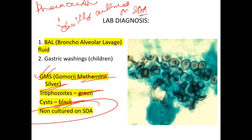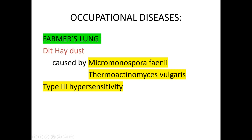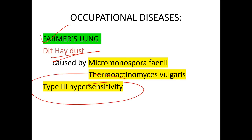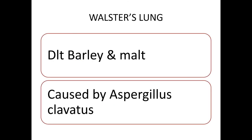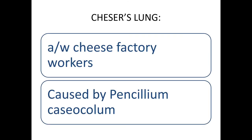Some occupational diseases: farmer's lung is caused by hay dust (type 3 hypersensitivity, caused by Micromonospora faeni and Thermoactinomyces). Bagassosis is caused by sugarcane dust. Malt worker's lung is caused by barley and malt. Cheese worker's lung is associated with cheese factory workers.